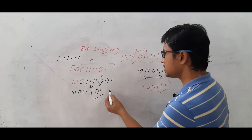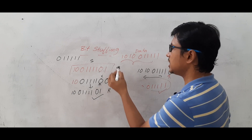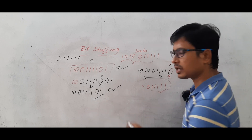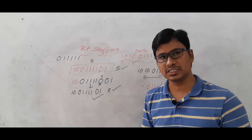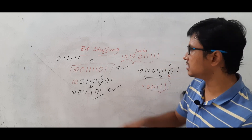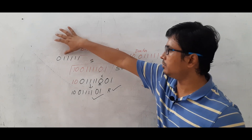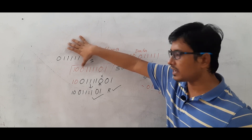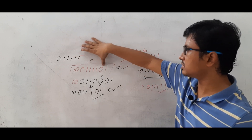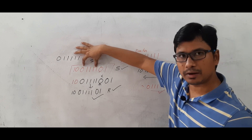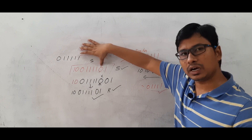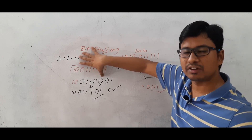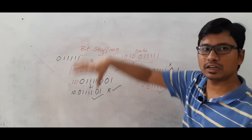Whatever the sender has sent, the receiver recognizes it properly and receives it correctly. In summary, if the end delimiter pattern is 0-five-1s, whenever four consecutive 1s appear in the data, the sender adds a stuffed 0 after them and sends the remaining information. This is called bit stuffing.